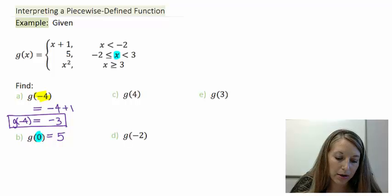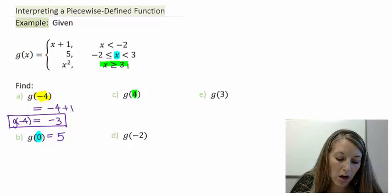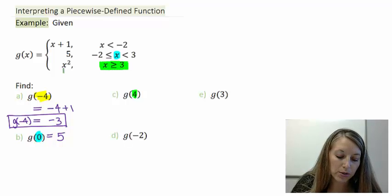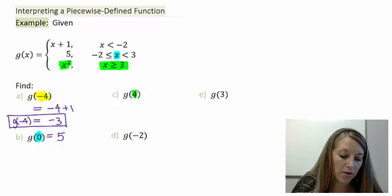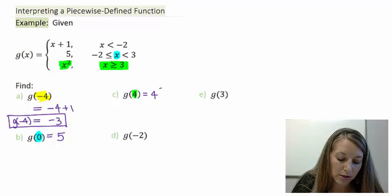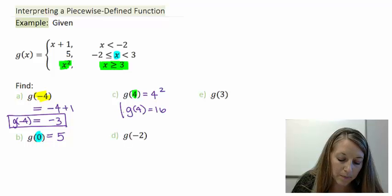In part C, we have g of 4. Since 4 is greater than or equal to 3, we substitute it into the third piece. That gives me 4 squared, which tells me that g of 4 is equal to 16.